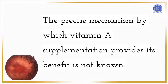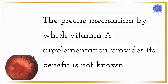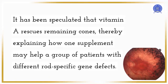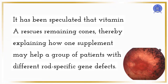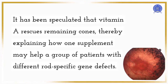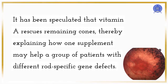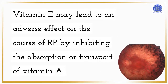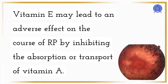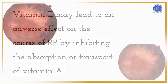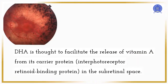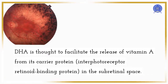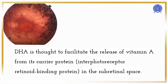The precise mechanism by which vitamin A supplementation provides its benefit is not known. It has been speculated that vitamin A rescues remaining cones, thereby explaining how one supplement may help a group of patients with different rod-specific gene defects. DHA is thought to facilitate the release of vitamin A from its carrier protein, interphotoreceptor retinoid binding protein, in the subretinal space.